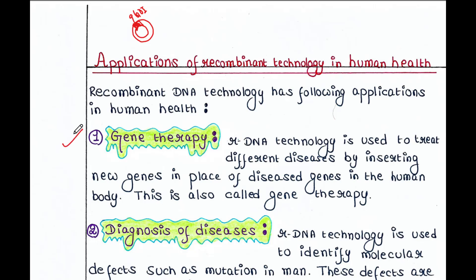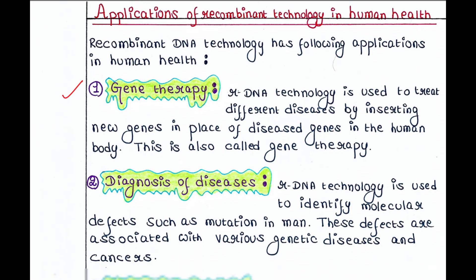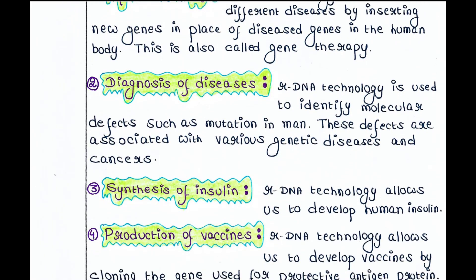Recombinant DNA technology has the following applications in human health. First is gene therapy. rDNA technology is used to treat different diseases by inserting new genes in place of disease genes in the human body. This is also called gene therapy, and in order to deliver that gene into your body, you need to clone that gene first in a suitable vector.